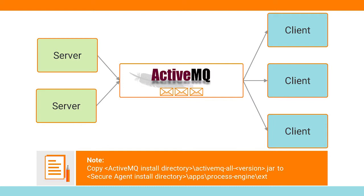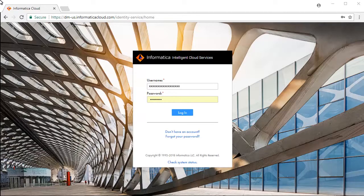We'll use an existing ActiveMQ server. It is important that you set up AMQP client libraries on the agent where you want to run this process. Copy the ActiveMQ JAR file to the desired location as shown here and restart the agent.